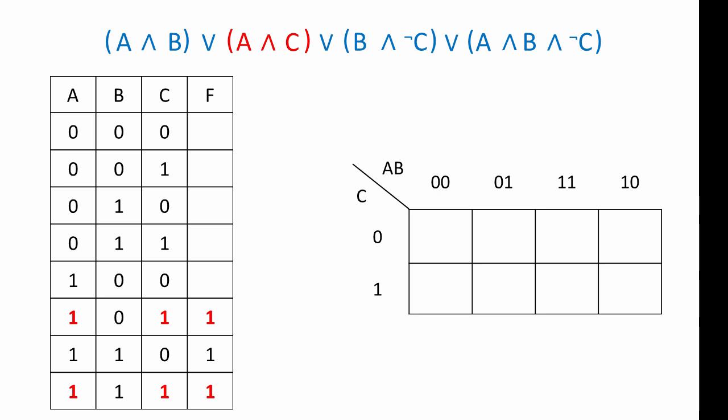It so happens I already had a one in the bottom row. For the next part of the expression, I'm looking for rows where B is one and C is zero, because we have NOT C this time. There are two such rows, and I can populate their output columns. And then finally, for the last part of the expression, I'm looking for rows where A is one, B is one, and C is zero. There's only one such row, so I populate its output column. My truth table is now complete — I just need to fill in zeros where there aren't ones, and I can transfer this across onto my K-map.